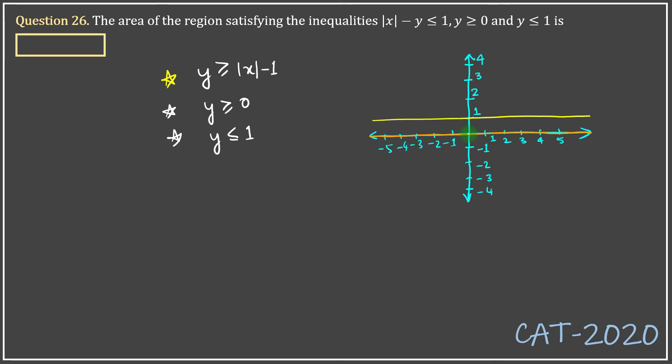Mod of x is a curve which would pass through the origin. Mod of x minus 1 would be one unit below that throughout the curve. So this curve. Now, y being greater than mod of x minus 1 would mean this region.